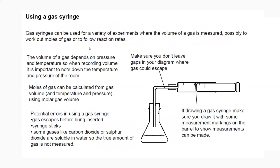Measuring the volume of a gas can be done using a gas syringe. The volume of gas depends on pressure and temperature, so note the temperature when recording volume. Moles of gas can be calculated as: moles = volume (in dm³) ÷ 24.